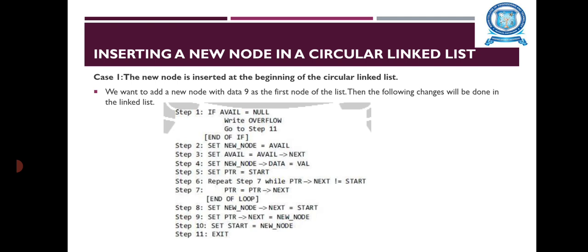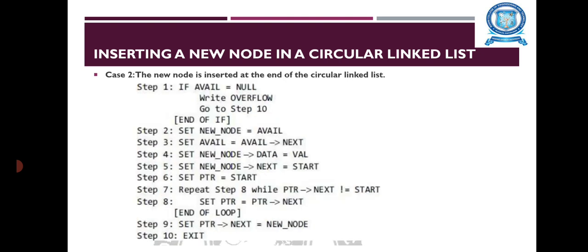The new node is added as the first node to the list and it will now be known as the start node — that is, the start pointer variable holds the address of the new node. While inserting a node in a circular linked list, we have to use a while loop to traverse to the last node of the list, because the last node contains a pointer to the start. Its next field is updated so that after insertion it points to the new node, which will be known as the start node.